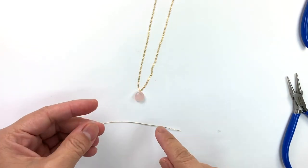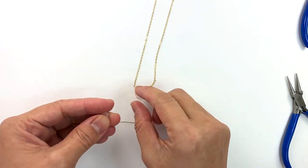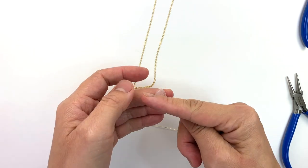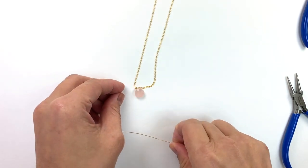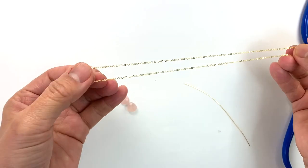I want to show you how to make a simple briolette necklace, something very sweet and simple like this. Briolettes are top drilled and here I have a chain that is 16 inches.